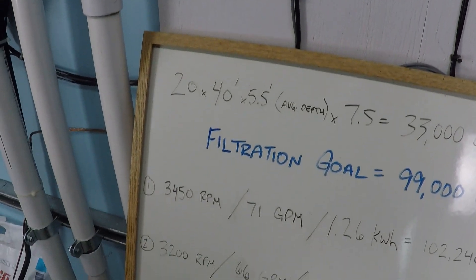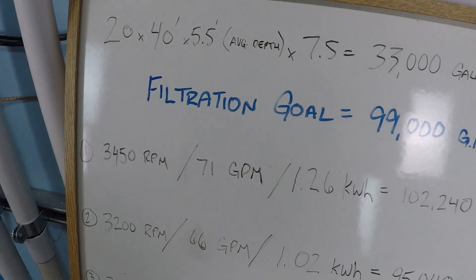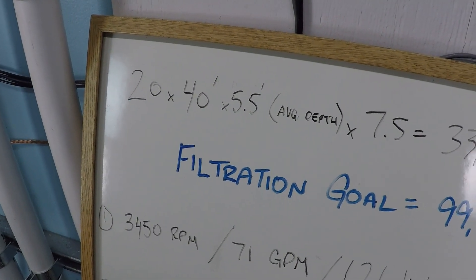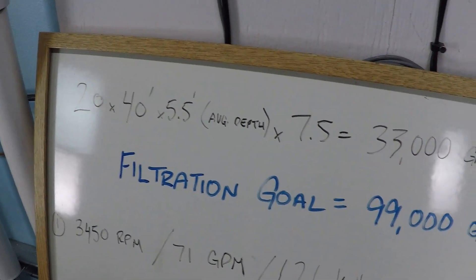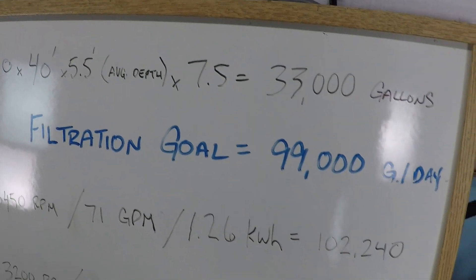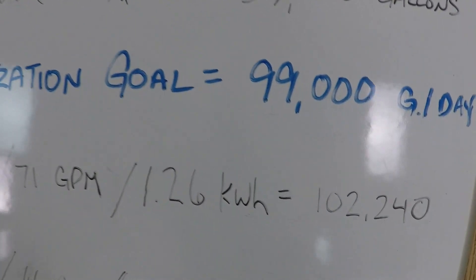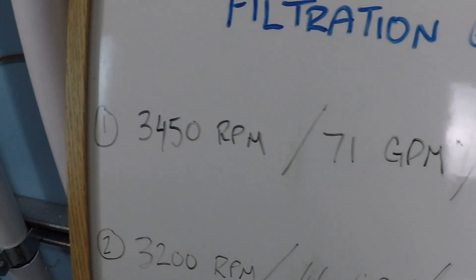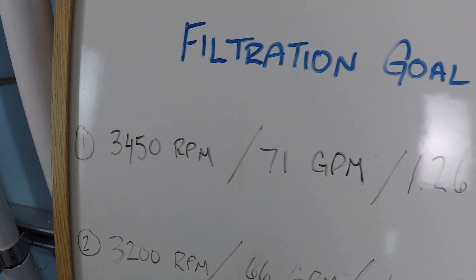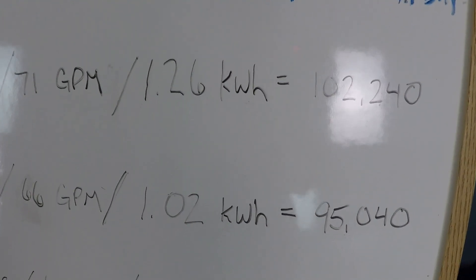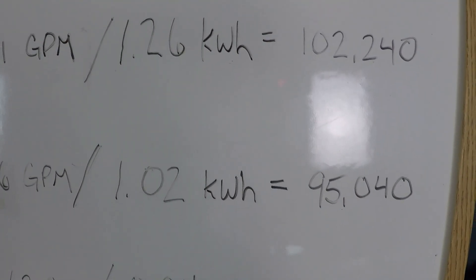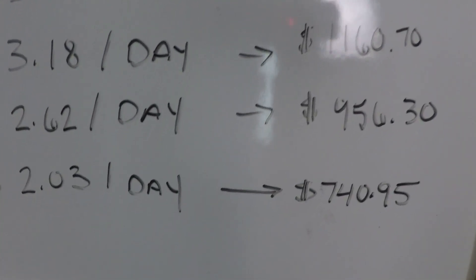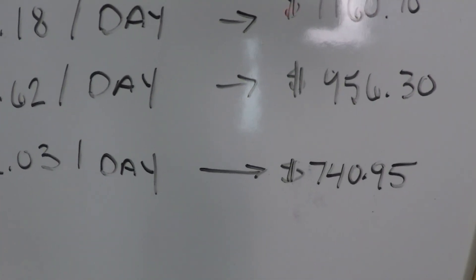So those are just the numbers behind the calculations here, to show you that as a pool owner with a large swimming pool and a fairly limiting plumbing system, you can still benefit from a variable speed pump. Sure, you could definitely make a case for running a single speed pump around the clock, but it costs an awful lot to do that. And even a marginal reduction in your RPM and a small reduction in your flow rate can have a pretty drastic reduction in the amount of cost that you pay to operate your swimming pool.